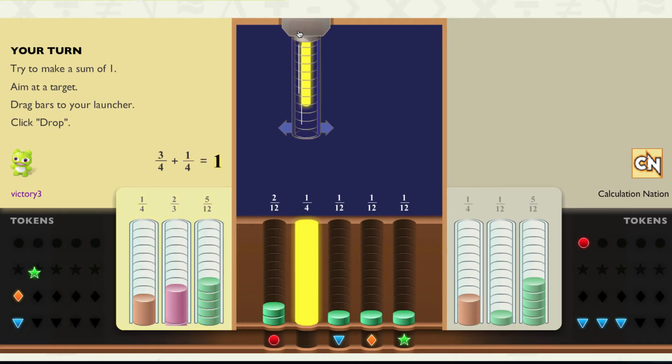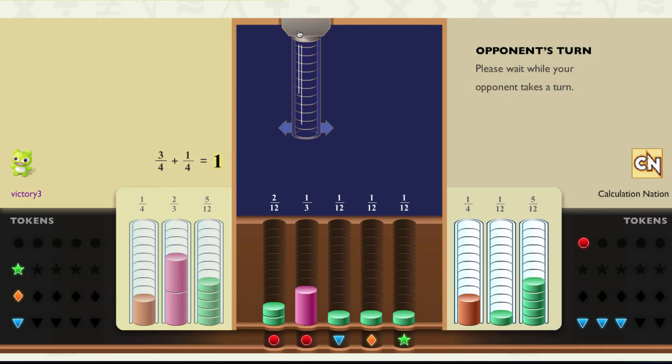One of the things that made the game powerful was to make it that if you add two fractions, you get two tokens. If you add three fractions and make a sum of one, you get three tokens.